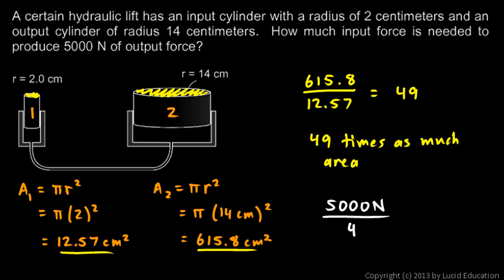5000 divided by 49 comes out to 102. So 102 newtons of input will generate 5000 newtons of output for this particular hydraulic system.